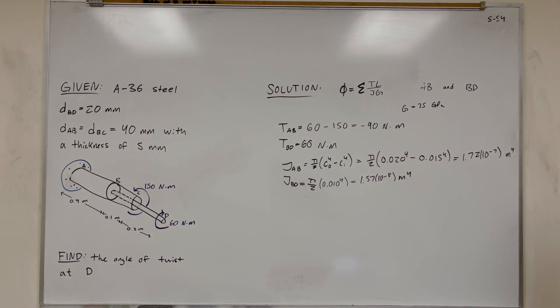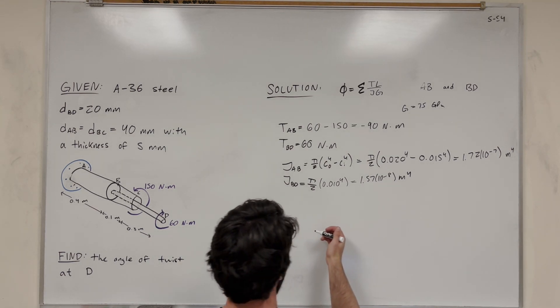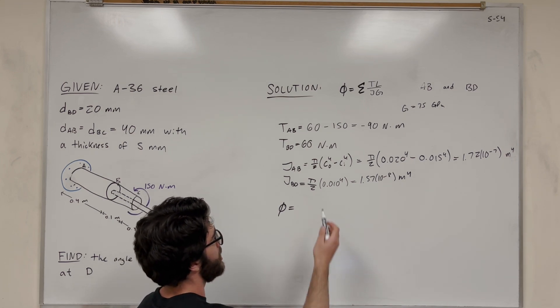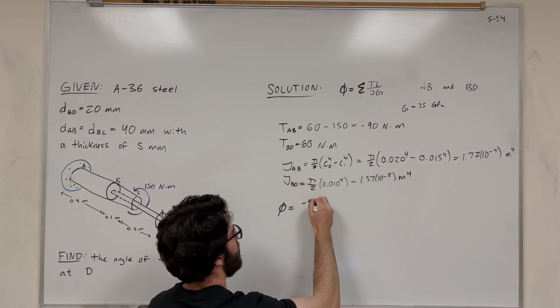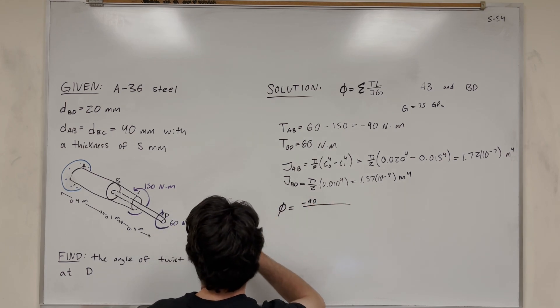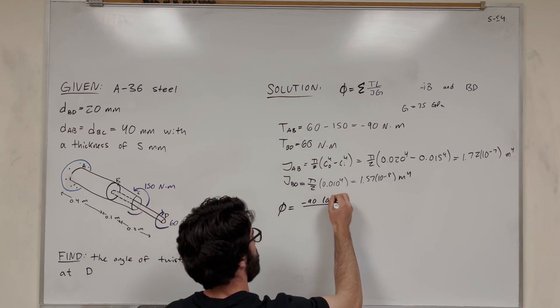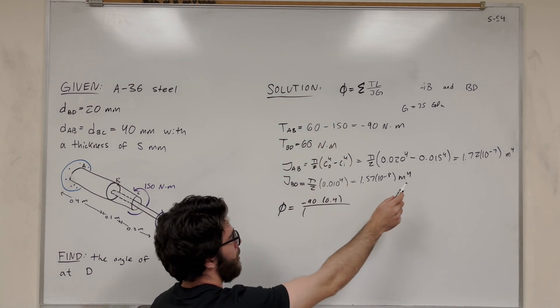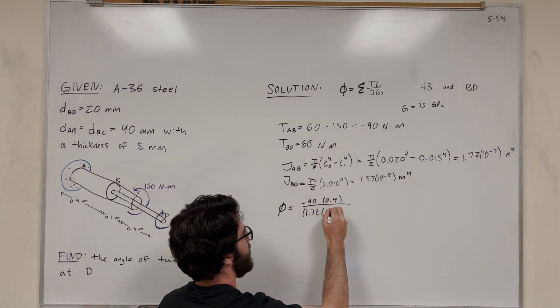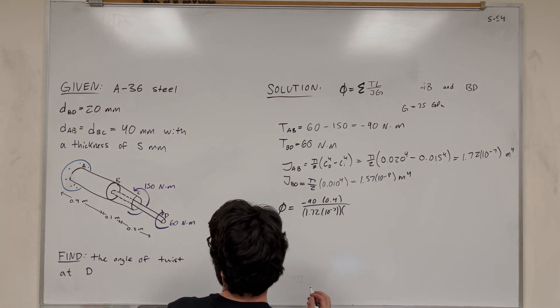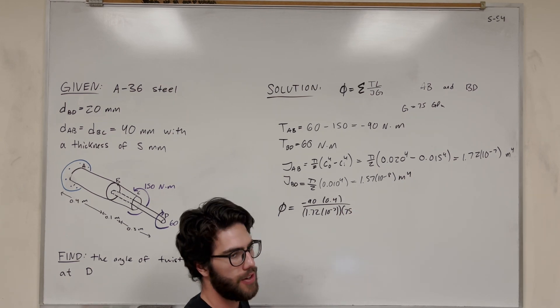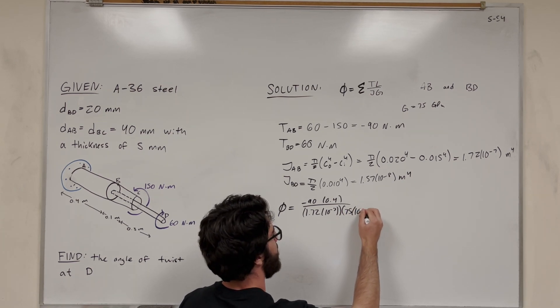Okay, so then now all we have to do is put it all together. So let's go ahead and do that. So angle of twist, let's use the formula. So we're adding it up, so let's start with AB. So we're going to add the torque in AB, which is negative 90, times the length of AB, 0.4 meters. Then divide it by the polar moment of inertia of AB, 1.72 times 10 to the negative 7th. And then, what's left? The modulus of elasticity, 75. So it's in GPa, we need to convert that to just Pascal, so we're going to multiply it by 10 to the 9th.